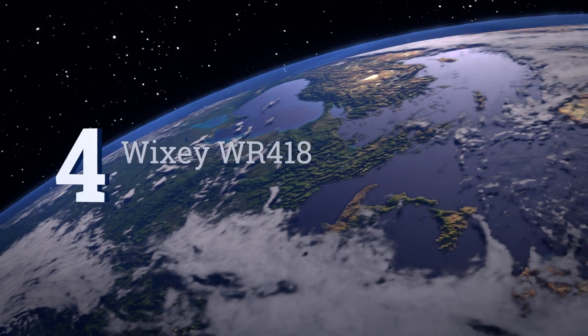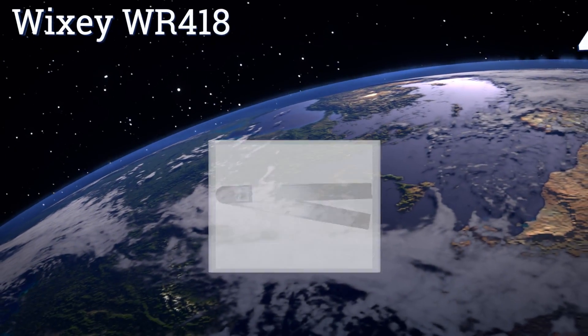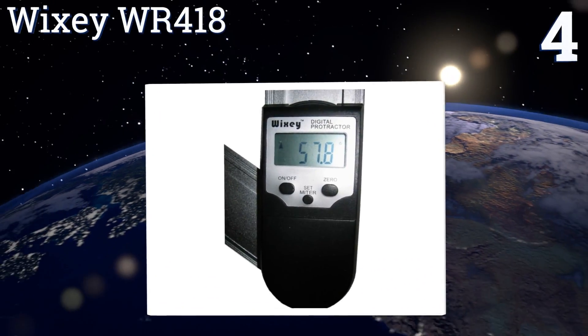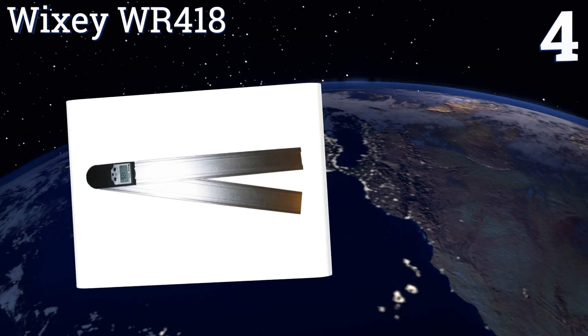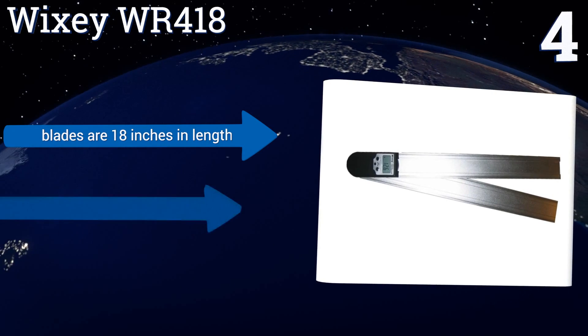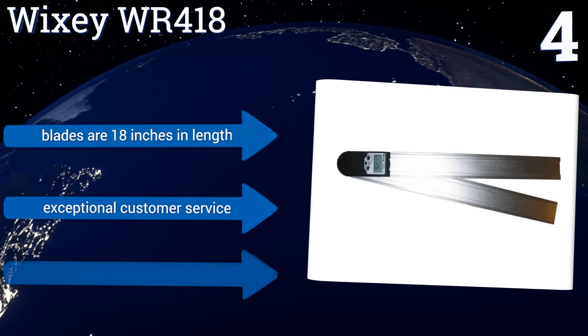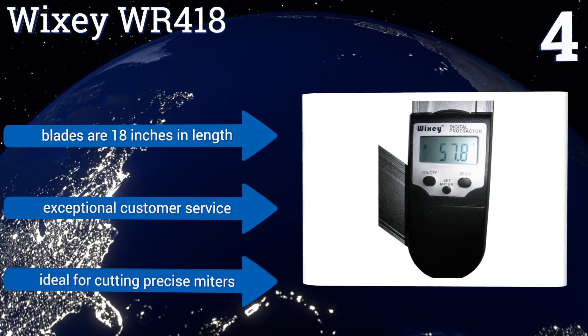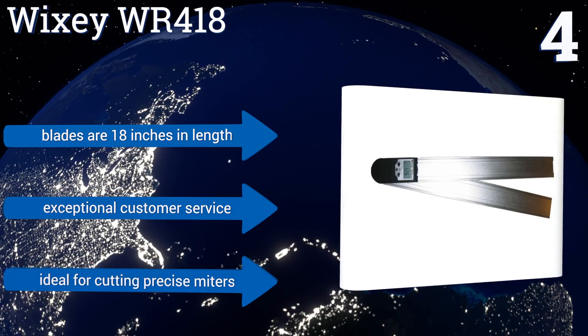At number four, with the ability to set both miter and bevel angles, the Wixey WR418 is a nice option for woodworking applications. Plus, its heavy-duty aluminum blades feature reliable magnets which enable you to easily attach the protractor to steel tables and other metal surfaces. Its blades are 18 inches long and the company provides exceptional customer service. It's ideal for cutting precise miters.